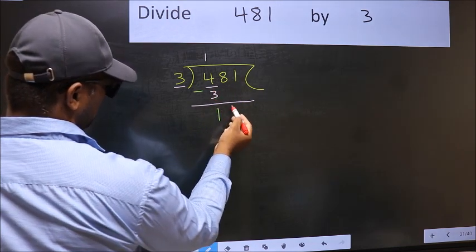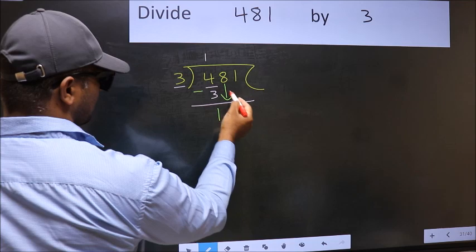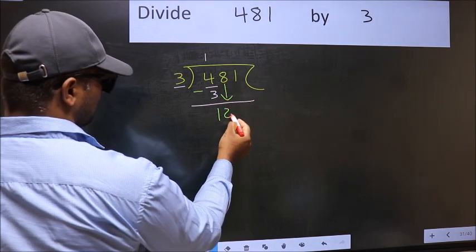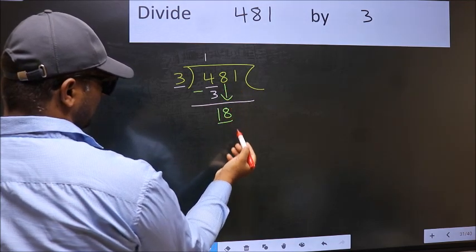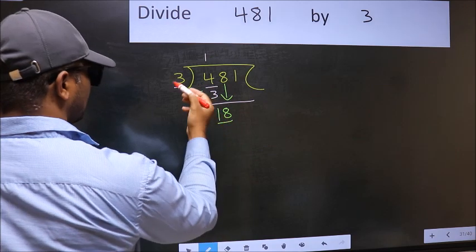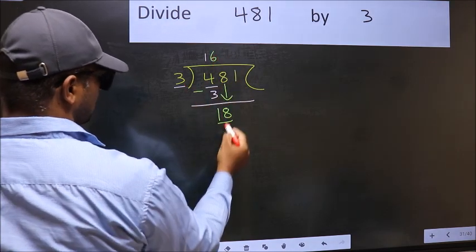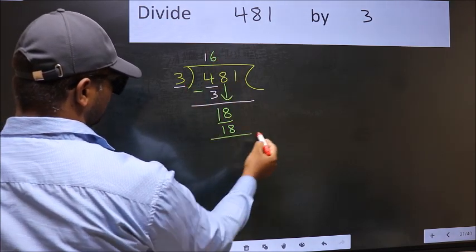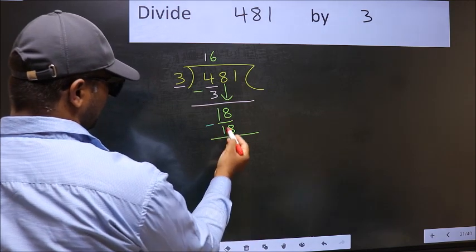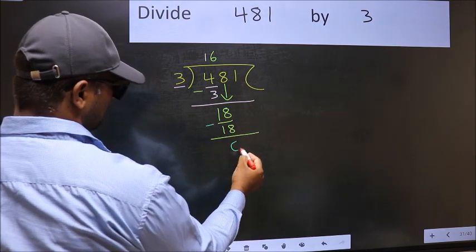After this, bring down the beside number. So 8 down. Now 18. When do we get 18 in 3 table? 3 times 6 is 18. Now you should subtract. 18 minus 18, 0.